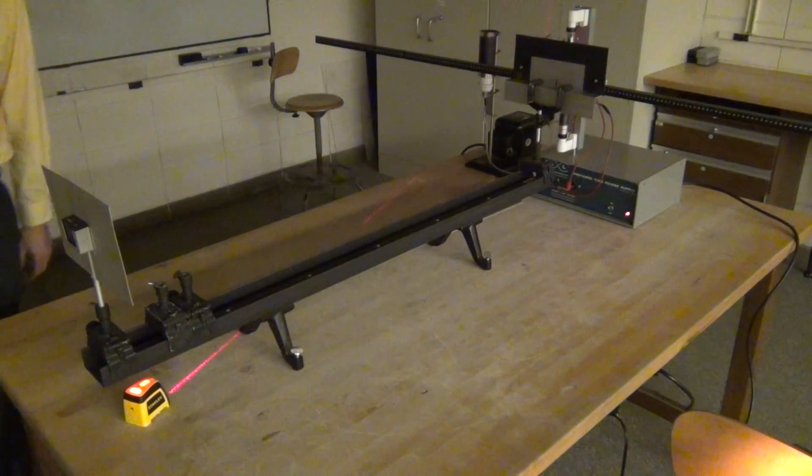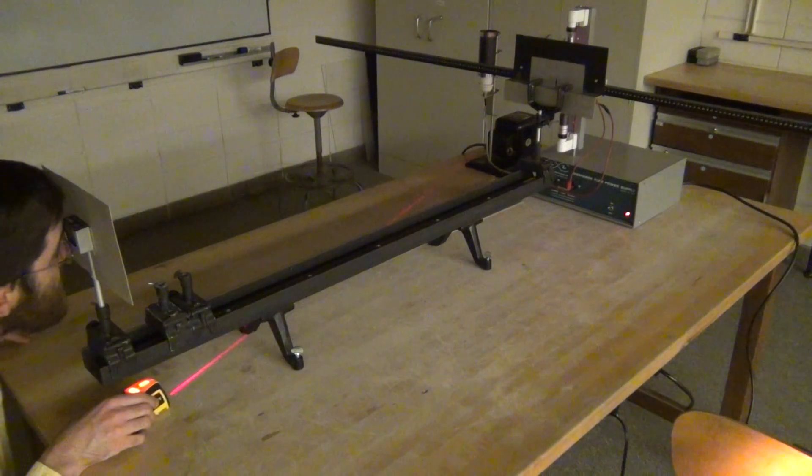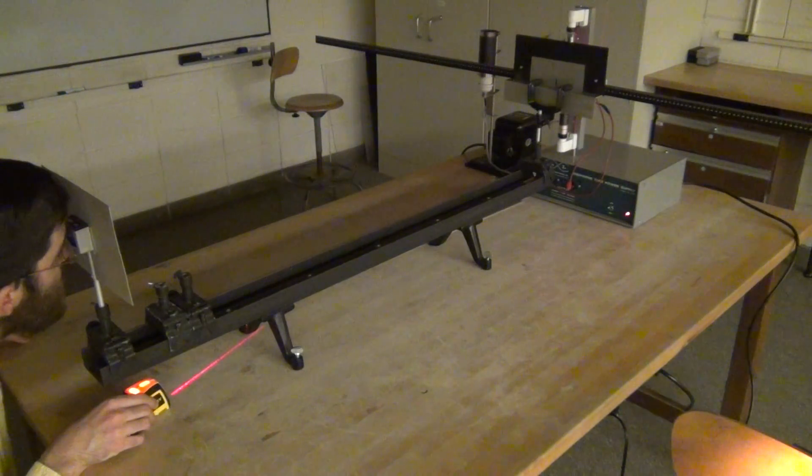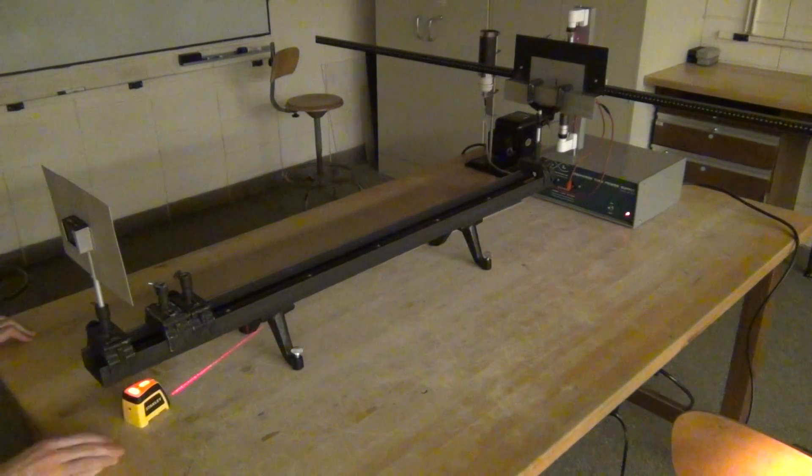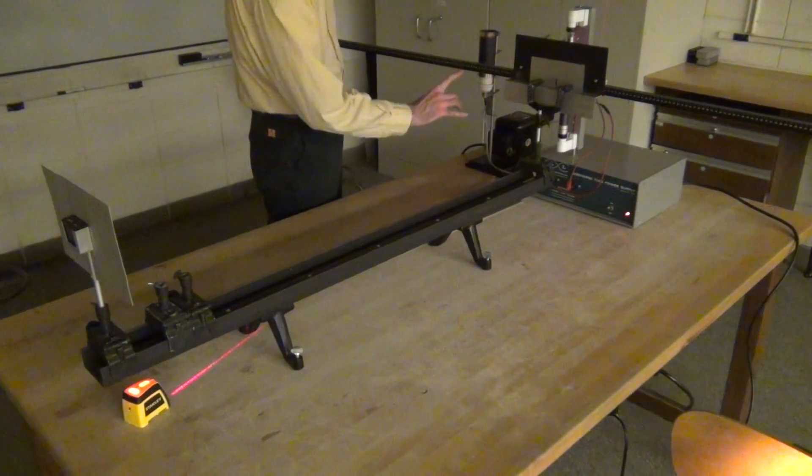And then, again, look through the diffraction grating for those spots where you see the color. And then line the laser up so that the laser falls on the ruler where you see the line. And then come and measure both sides.